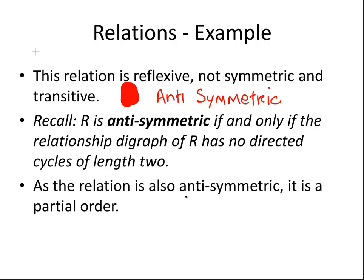So, as the relationship is also anti-symmetric, it is a partial order. Let's just go through that again. It is reflexive, it's anti-symmetric, and it's transitive. That means it is a partial order. That's accounting for the fact that it's reflexive and transitive.